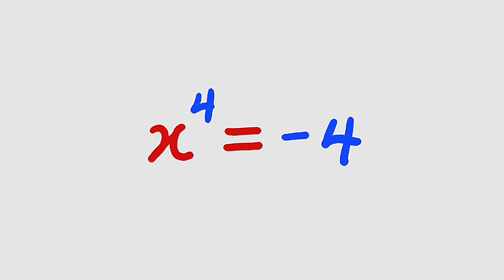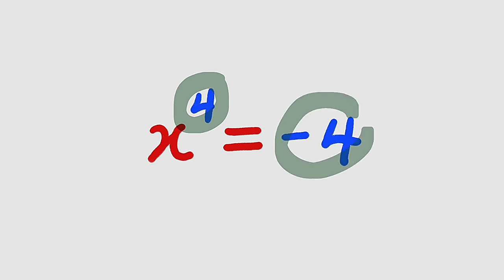Hello, good dear viewers. In this tutorial we are going to find a solution to this simple problem. We have x raised to the power of 4 equal to negative 4. Do we have any real number that can be raised to an even exponent and the result will be negative? There is no such number, therefore x must be a complex number.